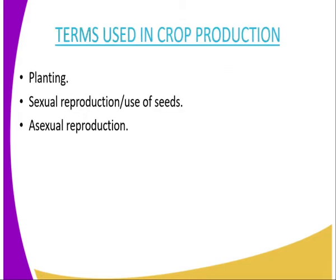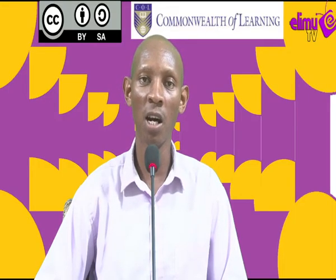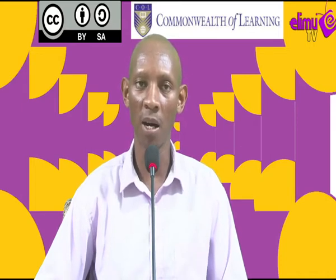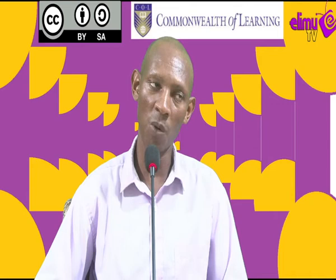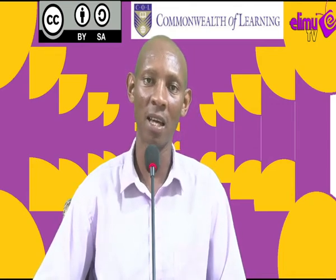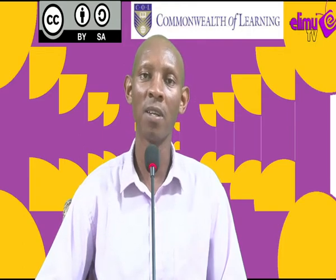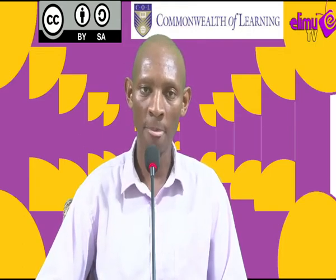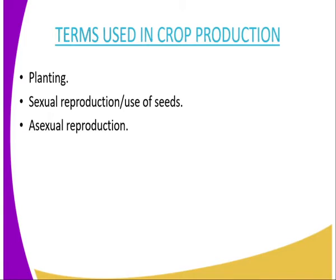The terms used in crop production. The first one is planting. What is planting? Planting is the placement of planting material into the soil with an aim of regeneration or reproduction of more crops. The second term is sexual reproduction. Sexual reproduction is the process through which individuals are reproduced with fertilization first taking place. Therefore, fertilization must take place for the reproduction process to be effected, and it involves the use of seeds as far as plant reproduction is concerned.